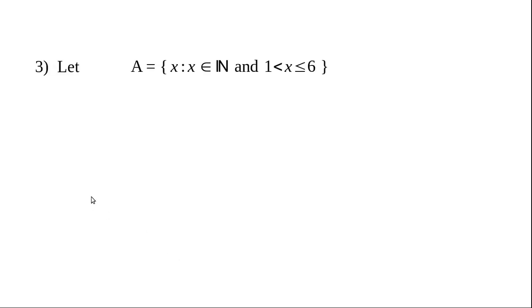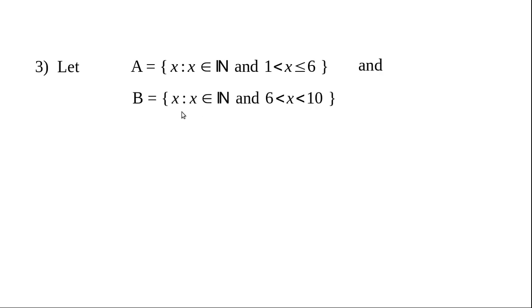Third example: Let S be the set of all x such that x is a natural number and 1 < x ≤ 6, and T be the set of all x such that x belongs to N and 6 < x < 10. The roster form of S is {2, 3, 4, 5, 6} and the roster form of T is {7, 8, 9}.